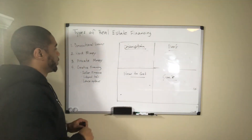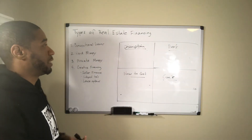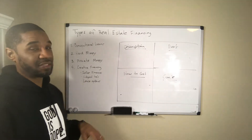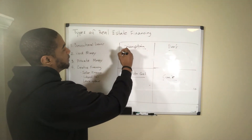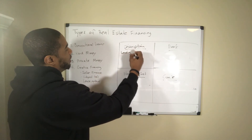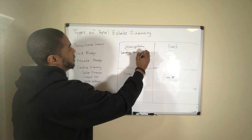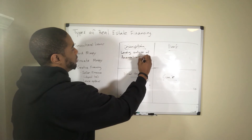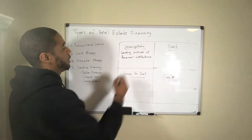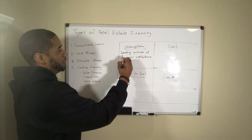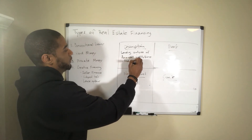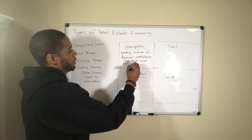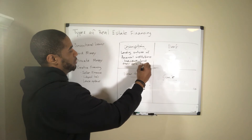Next is private money — the private market. A private money lender can be a bunch of different things, but basically what happens is there is no bank involved. This is lending that occurs outside of financial institutions. It can be individuals who lend their cash to investors.